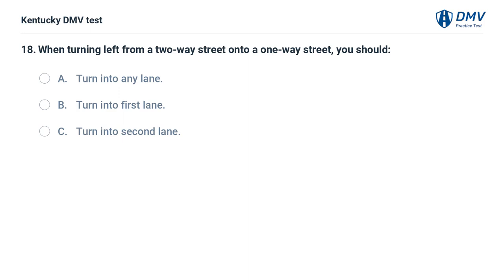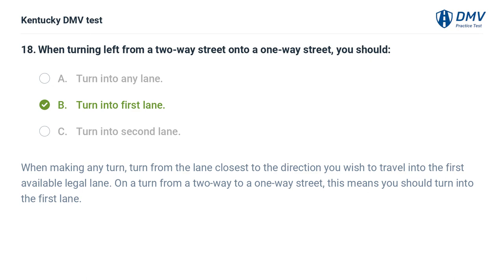When turning left from a two-way street onto a one-way street, you should: A. Turn into any lane. B. Turn into the first lane. C. Turn into the second lane. The correct answer is B, turn into the first lane. Turn from the lane closest to the direction you wish to travel into the first available legal lane. On a turn from a two-way to a one-way street, this means you should turn into the first lane.